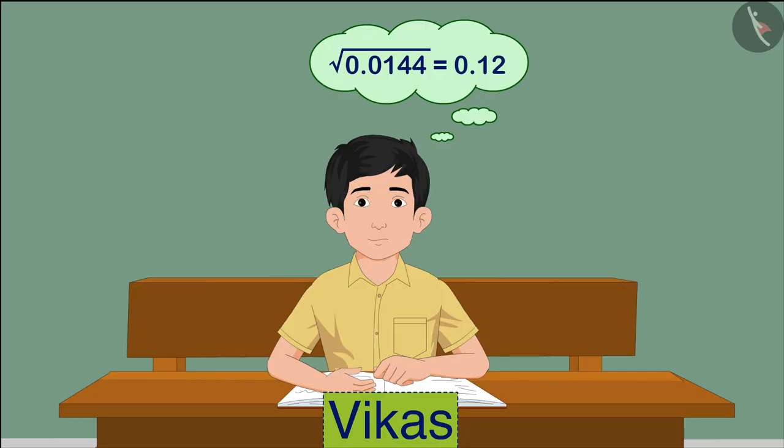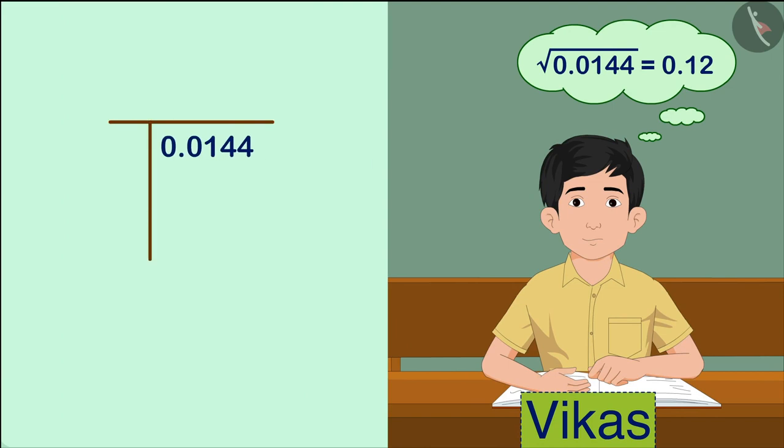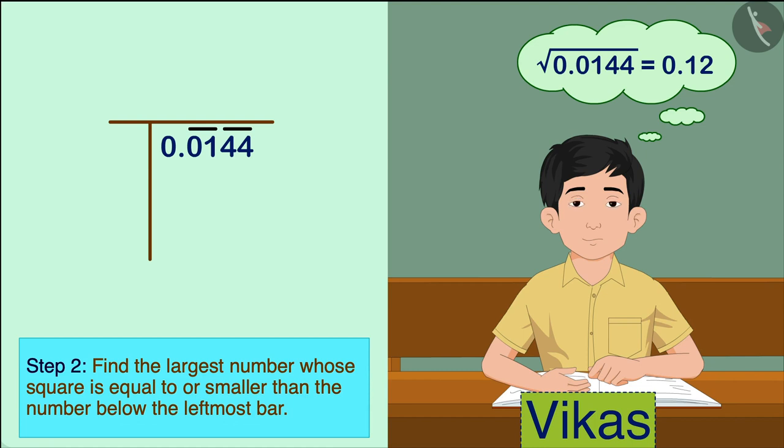Now let us see how Vikas has solved this question. This number has only the decimal part. So first of all, he made a pair from the right of the decimal point and placed bars on the numbers. Then he found the largest number whose square is equal to or smaller than the number below the leftmost bar. Here, that number is 1.